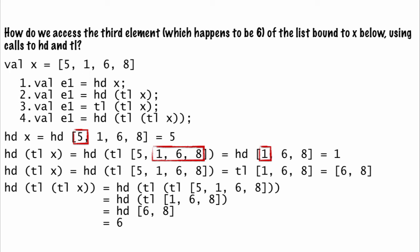The tail of the tail of x is the tail of 1, 6, and 8, which is the list 6 and 8.